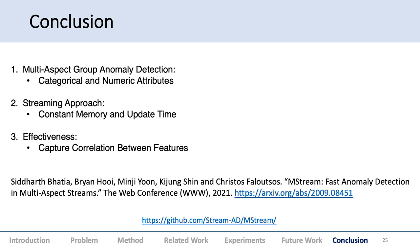Just to conclude, we could do multi-aspect group anomaly detection with both categorical and numeric attributes. We had a streaming approach with constant memory and update time. We were effective with real-world datasets and captured correlation between features. The paper is on archive and the GitHub repository is linked. Thank you for your time.